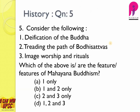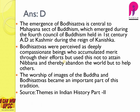Question number five: deification of the Buddha, treading the path of Bodhisattvas, image worship, and rituals — all three are features of Mahayana Buddhism. The answer is D — 1, 2, and 3. Mahayana emerged during the first century during the reign of Kanishka. Bodhisattvas were perceived as extremely compassionate — they did not use their effort solely to attain Nirvana, but abandoned the world to help others on the path to Nibbana.